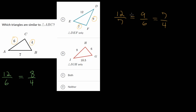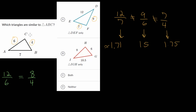At this point you can see that the ratios are not all the same. When you put 12 over 7 into the calculator you get approximately 1.71, and 9 over 6 is 1.5, and 7 over 4 is 1.75. The side lengths when comparing to option A are not proportional, so triangle DEF is not similar to triangle ABC.